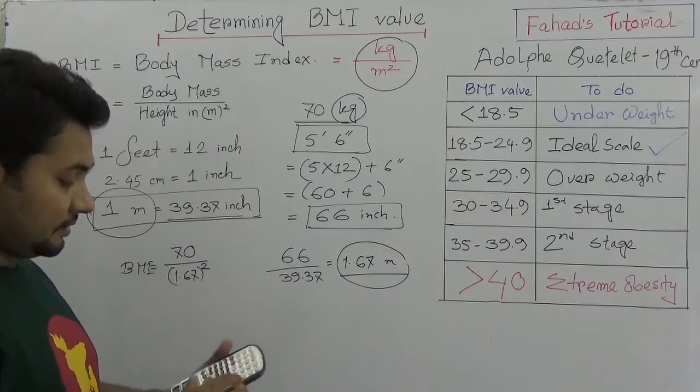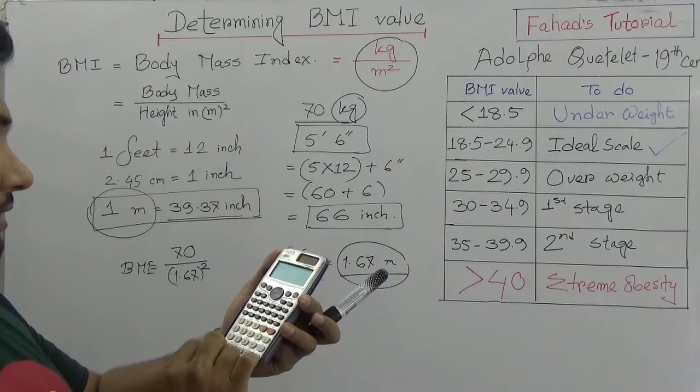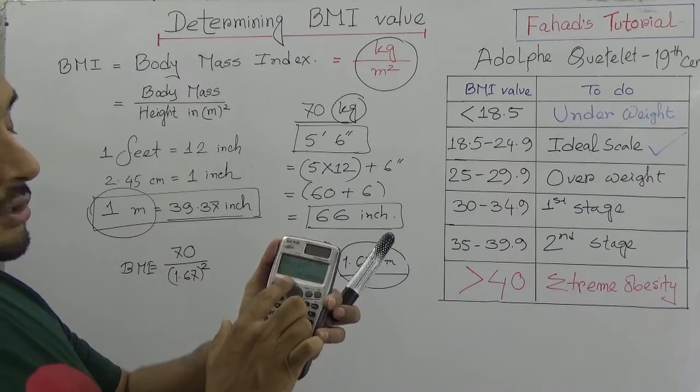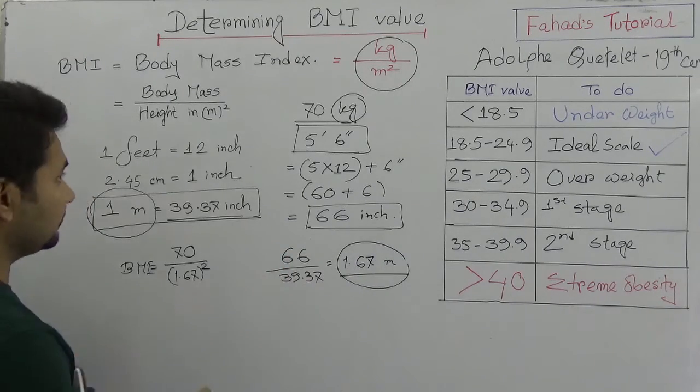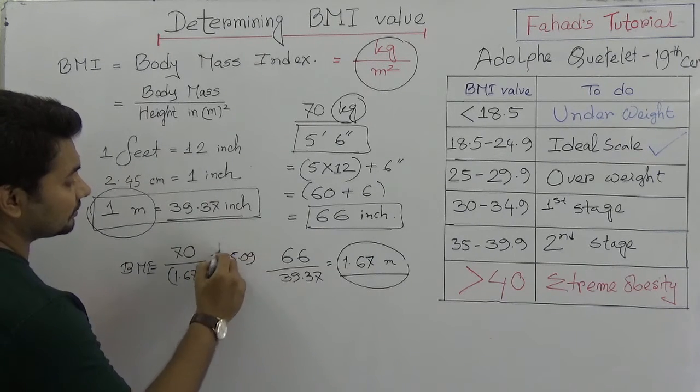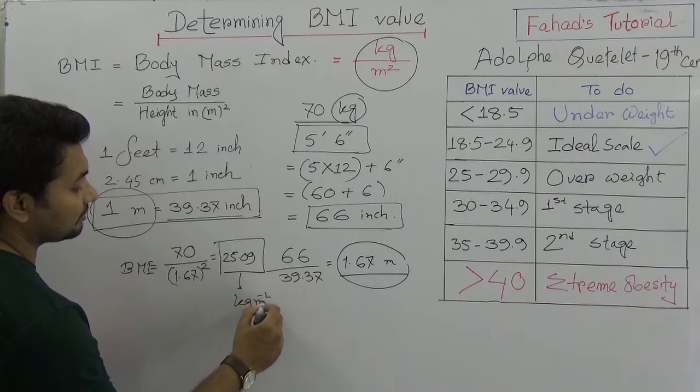So we got it - 70, so say 70 divided by 1.67 square, so it's 25.09. So we can say that is 25.09. So the unit should be kg per meter square.